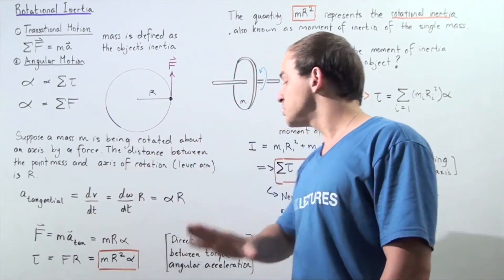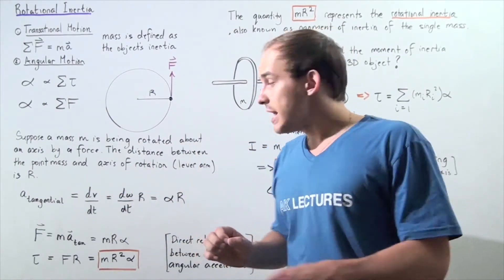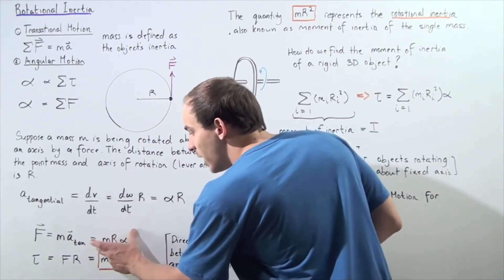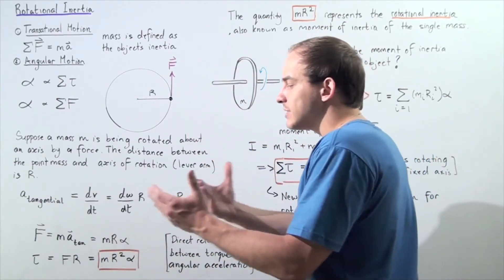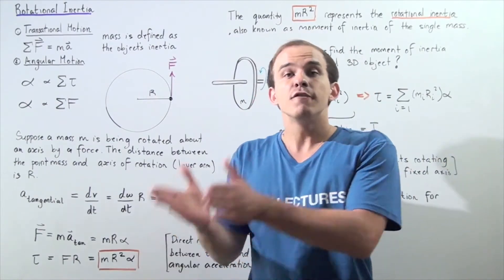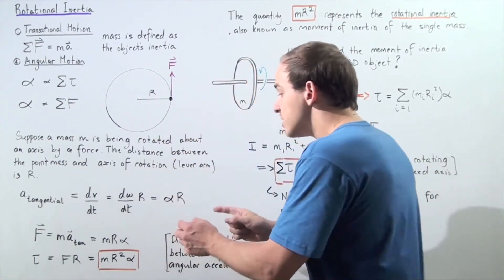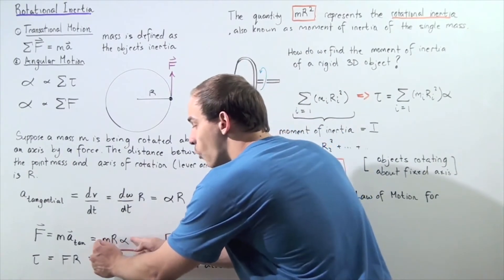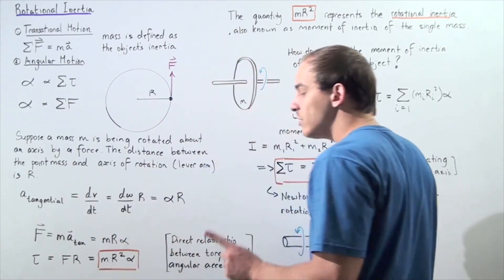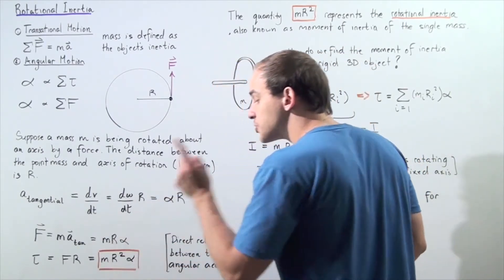We take Newton's second law — force equals mass times tangential acceleration — and replace tangential acceleration with α · R. So the force acting on the object equals mass times R (the lever arm) times angular acceleration. Now we represent this in terms of torque. Recall that torque equals force multiplied by the lever arm, so we multiply the entire force expression by R and get: torque = mass × R² × angular acceleration.